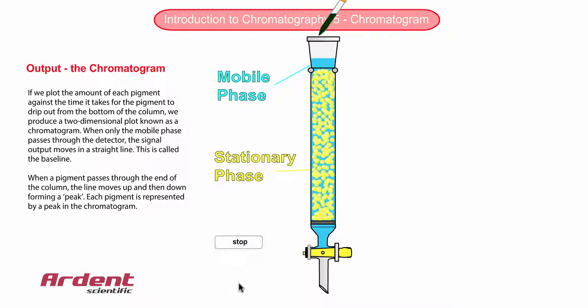However, when a colored pigment drips out of the column, the line moves up and down, forming what we call a peak. Each pigment is represented by a peak in the chromatogram.